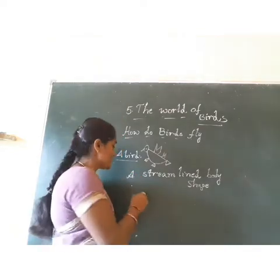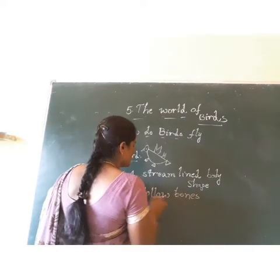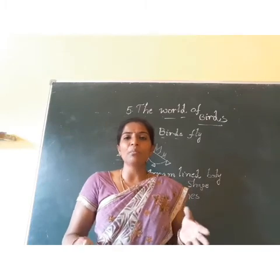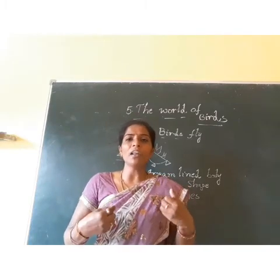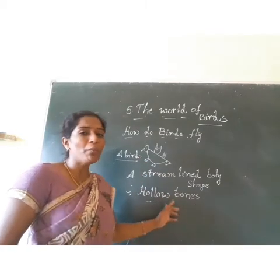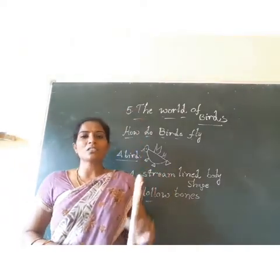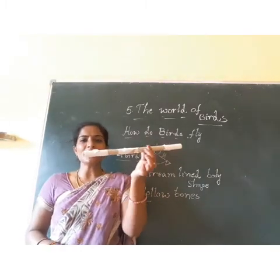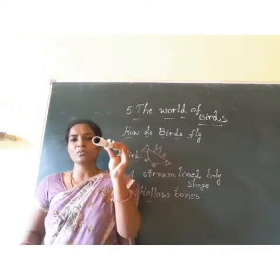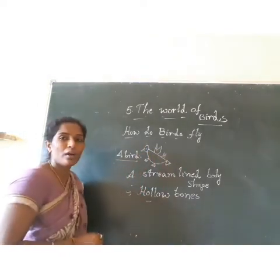And also, one more important thing — the bird has hollow bones. What is the meaning of hollow? It means nothing is inside. For example, if you see a chicken bone, bone marrow is present in that. Our body also contains bone marrow. But birds have hollow bones — nothing is present inside that bone. It is like a tube — see, nothing is there in this tube.